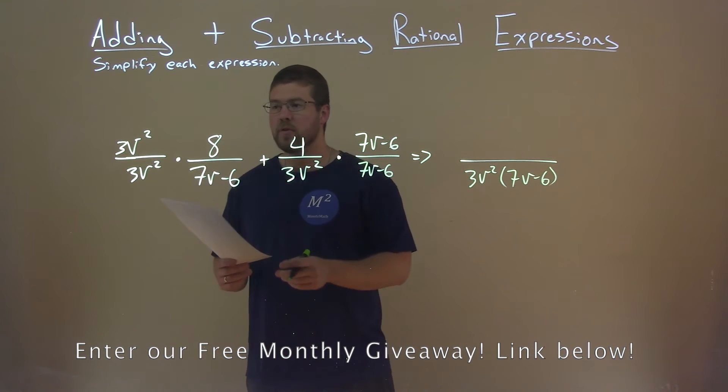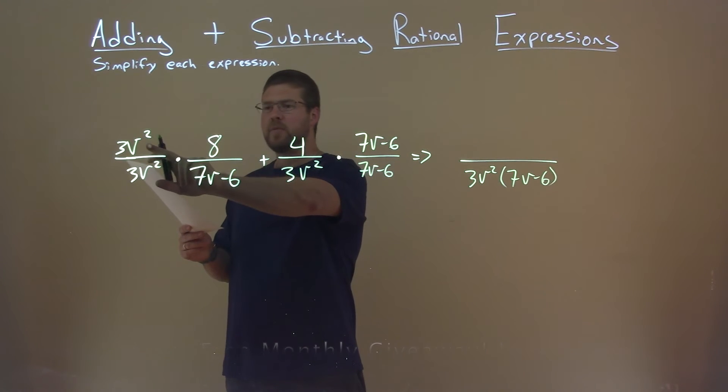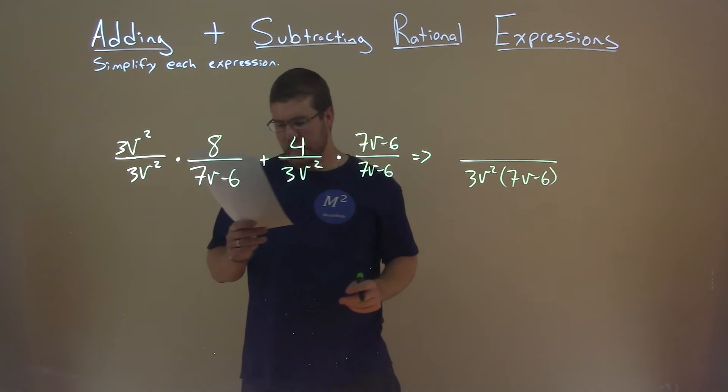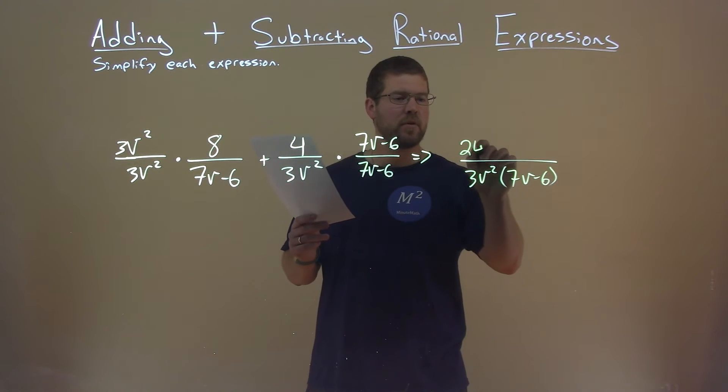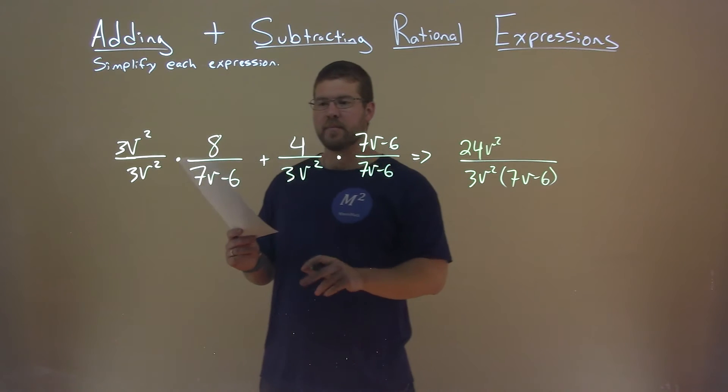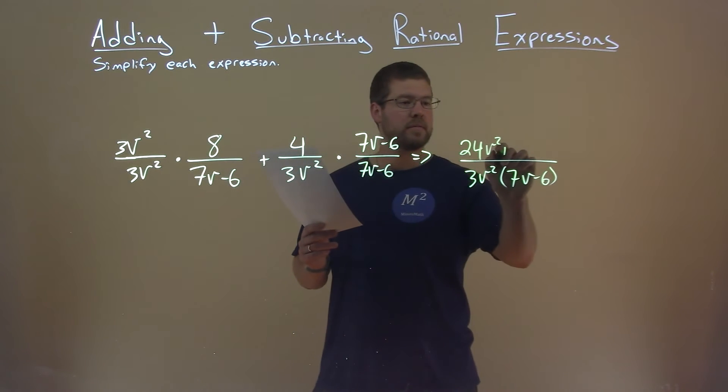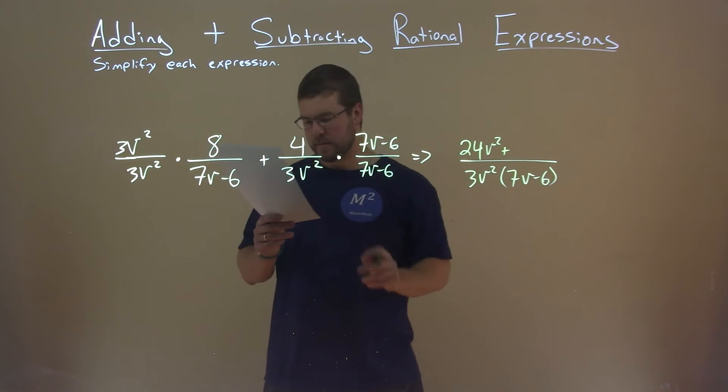So what about the numerator? Well, we have 3v squared times 8, which is 24v squared. And we're adding that to 4 times 7v.